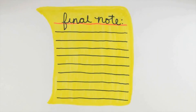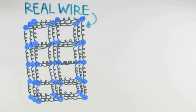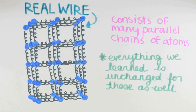One final note here. Wires aren't typically one atom thick. A real wire would consist of many parallel chains of atoms, something like this. Nevertheless, what we just said about the connection between the stretch of the spring-like bonds and the tension in the wire that was one atom thick carries over unchanged to this case as well.